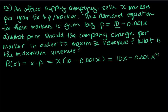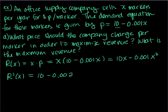We've spent the last two sections talking about how to find maximums. We take the derivative: R'(x) equals 10 minus 0.002x, and set that equal to zero. Adding 0.002x over gives 10 equals 0.002x, and dividing by 0.002 gives x equals 5,000.